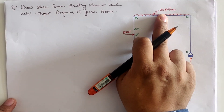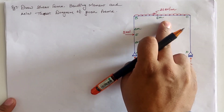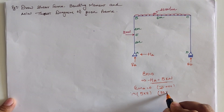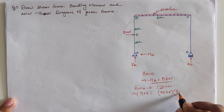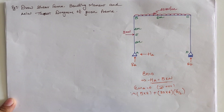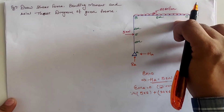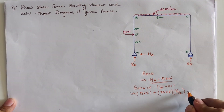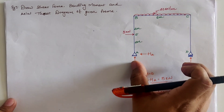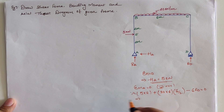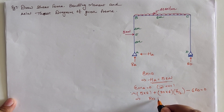For the UDL, the moment is total load into distance into distance by two. The value is clockwise, so we take it as positive. For R_D, it creates an anticlockwise moment at location A since R_D is in the upward direction, so we take it as negative. The perpendicular distance between A and D is six meters, giving a term of six times R_D.